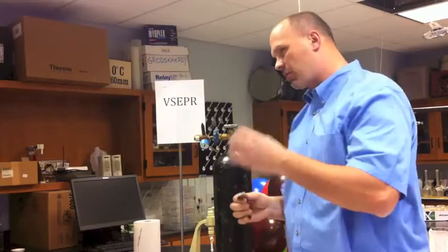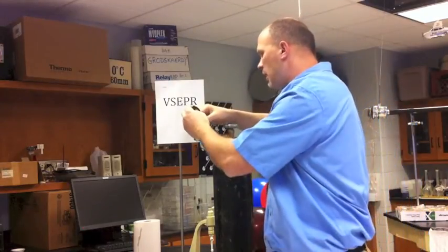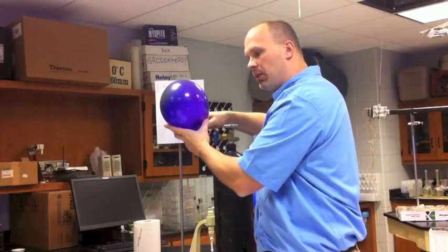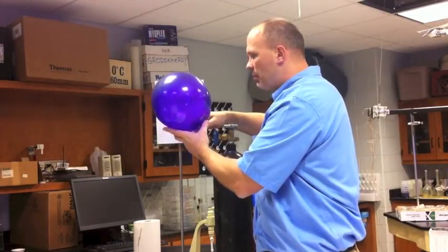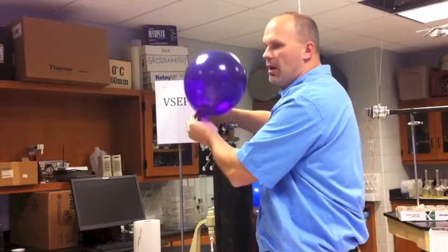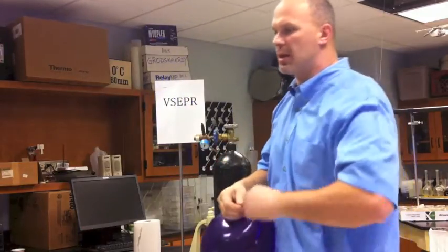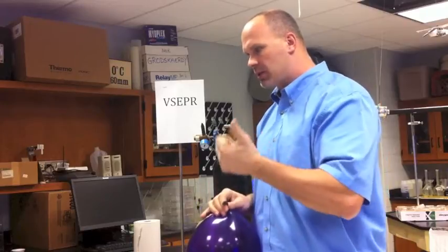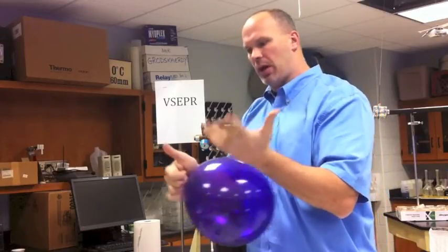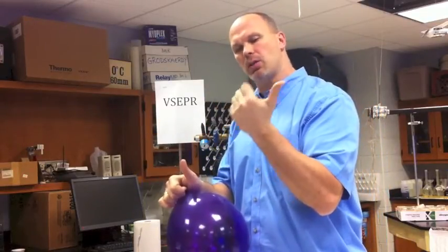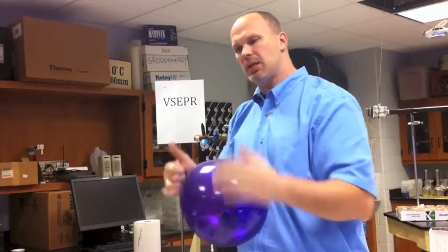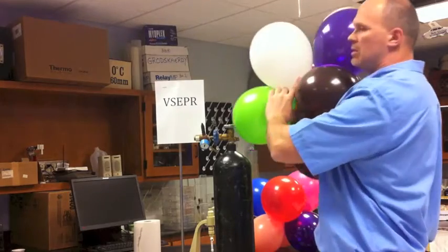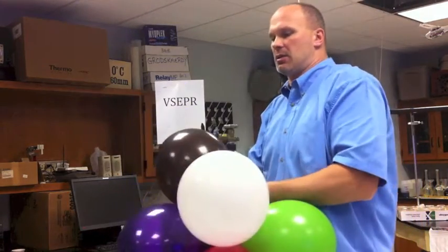So that would be SP3D2 is the one that's coming up. I'm adding another balloon here that represents another electron pair that can exist in an area called an orbital. So one S, three Ps. Now two Ds. I'm sorry. One S, three Ps, and two Ds give me SP3D2. And that's a total of six pairs of electrons that can exist.